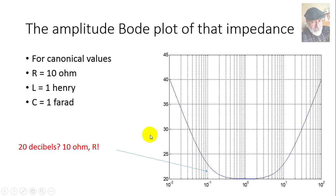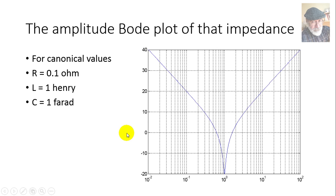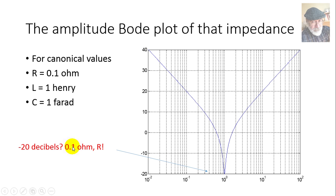Now with a tiny resistance of 0.1 Ω, the characteristic becomes much thinner — a very selective filter that drastically rejects any frequency that is not 1/√(LC). The minimum value is -20 dB, which is 20·log(0.1) = -20. The minimum value of the impedance is again the resistance. It seems the selectivity of the filter depends on the resistance.